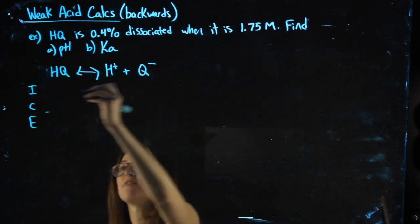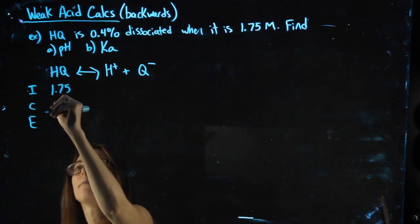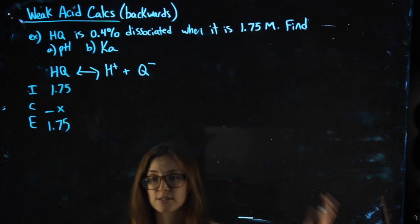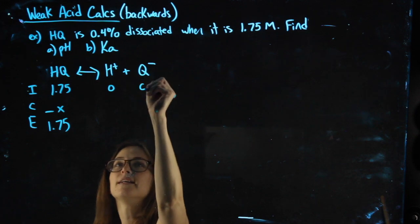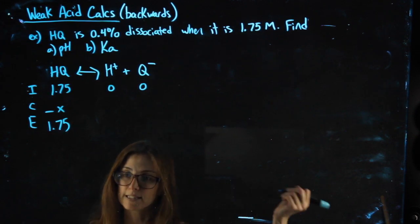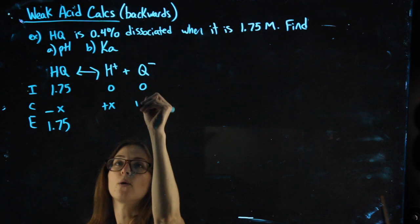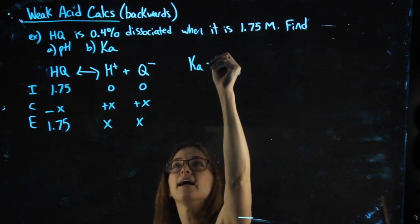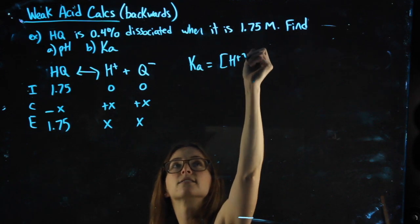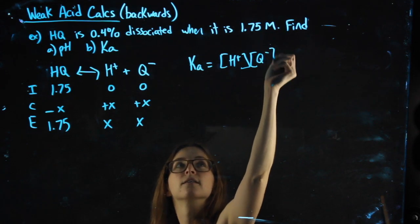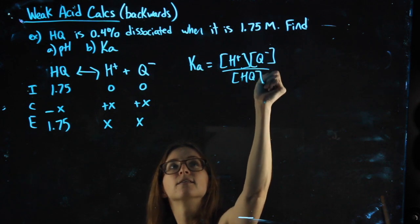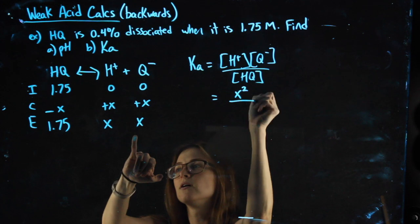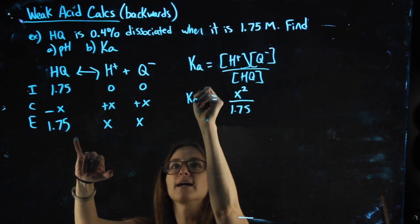We know it's 1.75 molar. Minus X we can assume doesn't matter because it's fairly dissociating since it's a weak acid. They didn't give us initial values for H and Q, so there must be 0, meaning we're going up and ending up with X. My KA is products over reactants for X times X, X squared, over 1.75, and that is my KA.